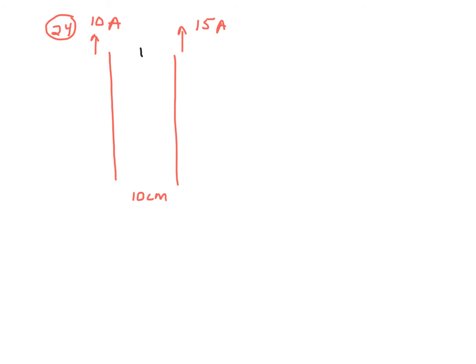That midpoint would be defined by a line halfway between each wire — five centimeters from each wire. The magnetic field strength from a current-carrying wire can be calculated by the equation B equals mu zero over two pi times the current in the wire divided by how far away we are from the wire.